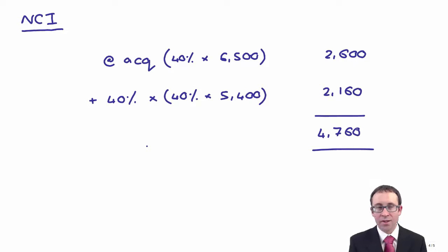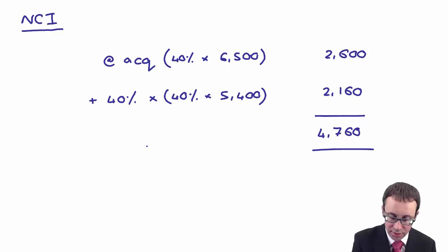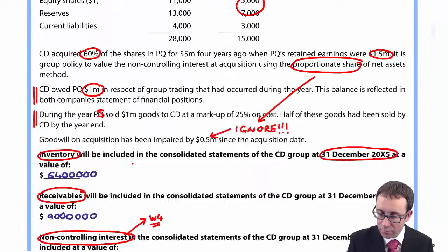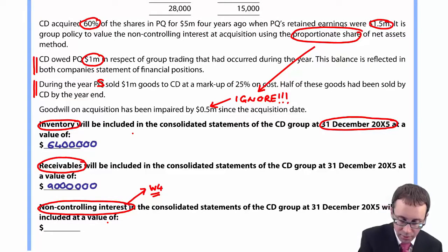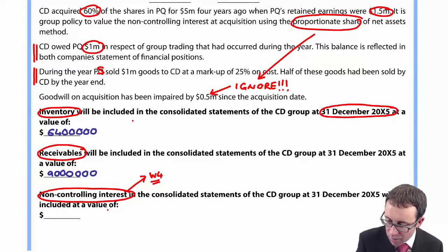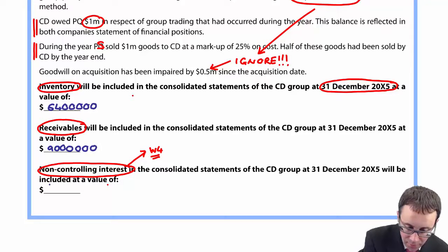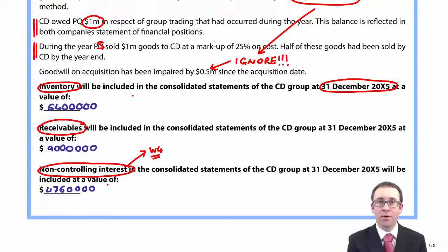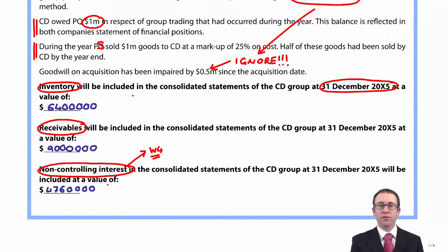The total non-controlling interest figure is 4,760,000. Any one of those three parts — inventory, receivables, and non-controlling interest — are likely to be exam standard questions. The inventory and receivables were pretty straightforward; the non-controlling interest was just a little bit trickier. So be on the lookout for that within the exam. Keep working hard and I'll see you later.